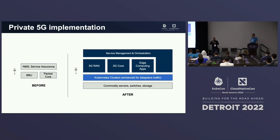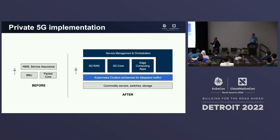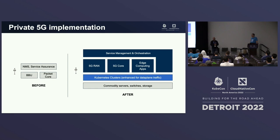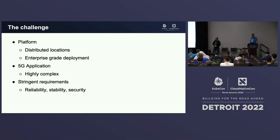Current networks are going to be built on Kubernetes clusters sitting on commodity servers, switches, and storage. The entire network is containerized. Other than the radio, which is a physical piece of equipment, your radio access network and 5G core are all containerized network functions. Edge computing applications are containerized as well. On top is a service management and orchestration layer that manages these network functions and applications across hundreds or thousands of clusters.